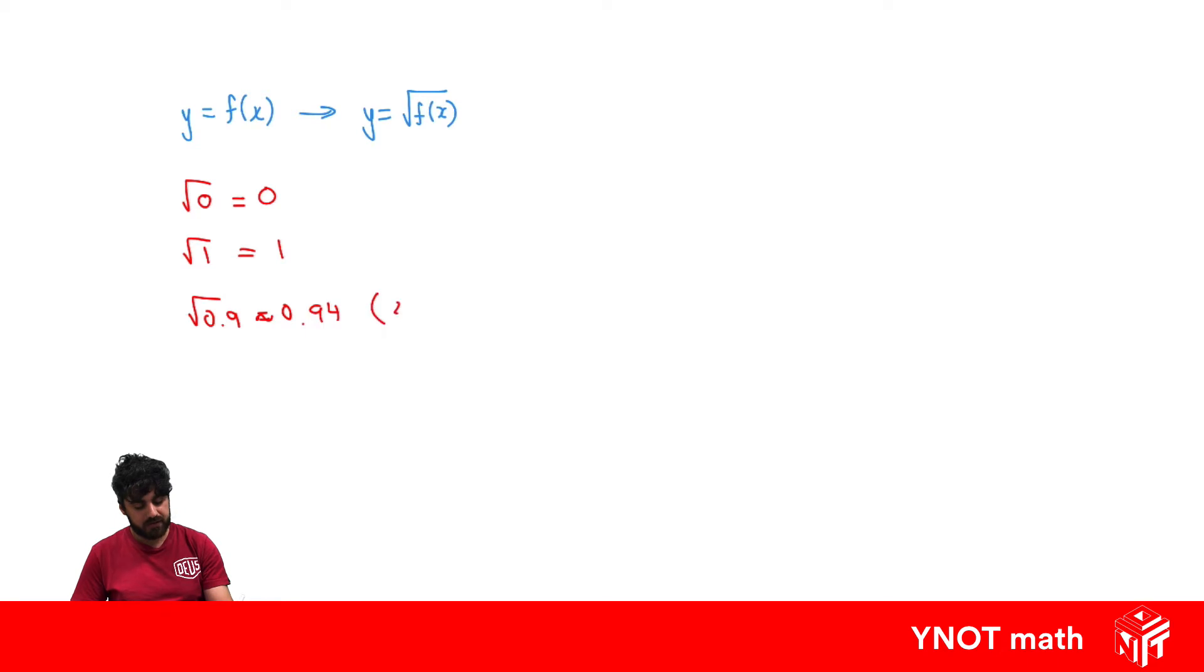But if a number is greater than 1, let's say 1.2, that's roughly equal to 1.095. So the number ends up being smaller, which is pretty obvious.